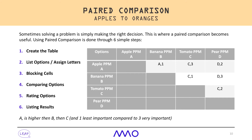For today's example, let's focus on comparing options. The first step is to create a table — along the top and down the side you list the options you want to compare and assign each a letter sequentially. In this example we are comparing project portfolio management tools called Apple PPM, Banana PPM, Tomato PPM, and Pear PPM. You then block out cells where you'd be comparing an option against itself.